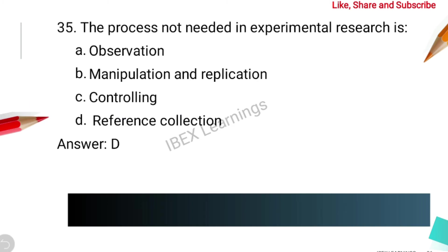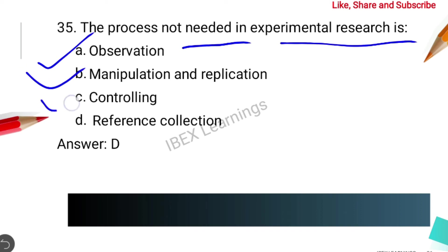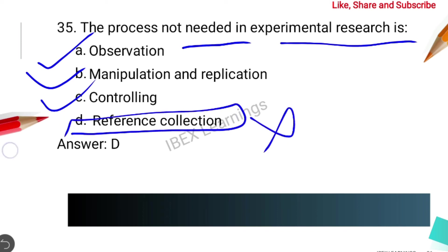The next question is: which process is not needed in experimental methods? In experimental research, you need observation, manipulation, replication, and control. You also need to see the effect of variables. One thing that is not needed is reference collection. The correct answer is option D.